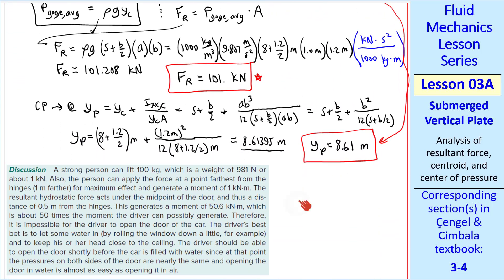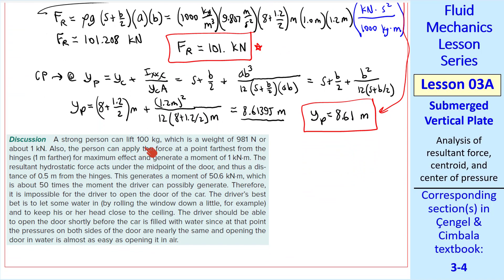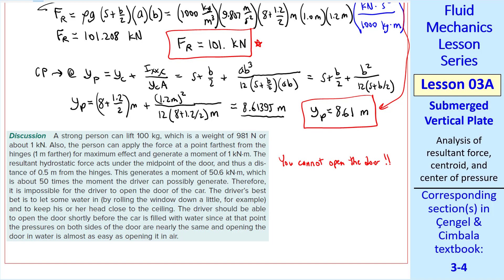Finally, let's look at how much force this is. A really strong person can lift about 100 kilograms, or 981 newtons, 1 kilonewton. If you put your feet on the door from the inside, at the farthest point from the hinge, your maximum moment is about 1 kilonewton meter. But the hydrostatic moment is about 50 kilonewton meters. Approximately 50 times the moment the driver can possibly generate. So you cannot open the door.